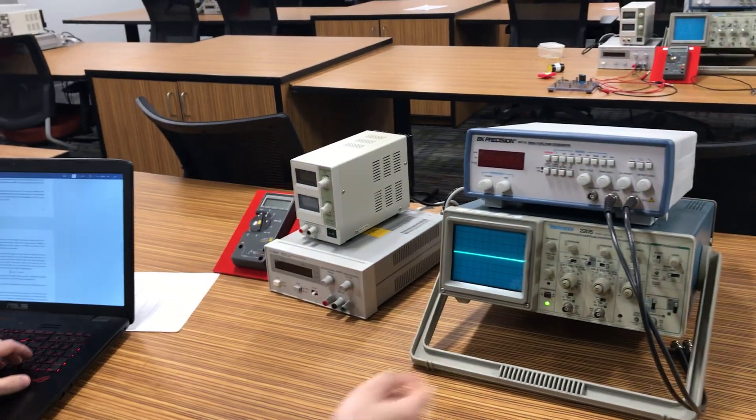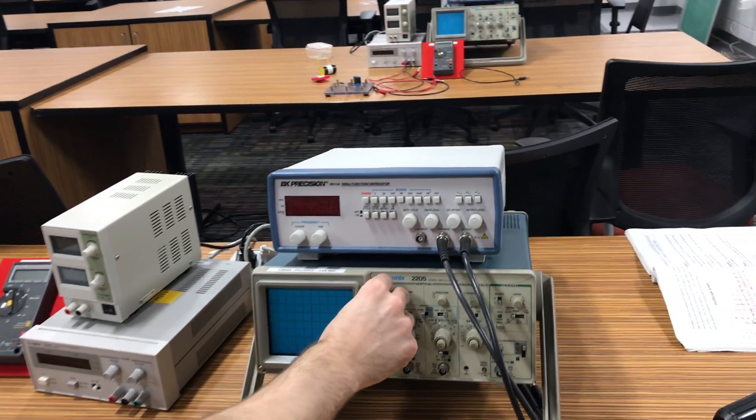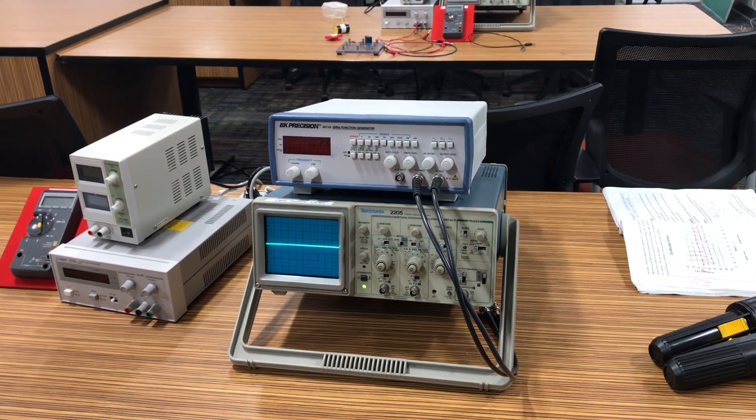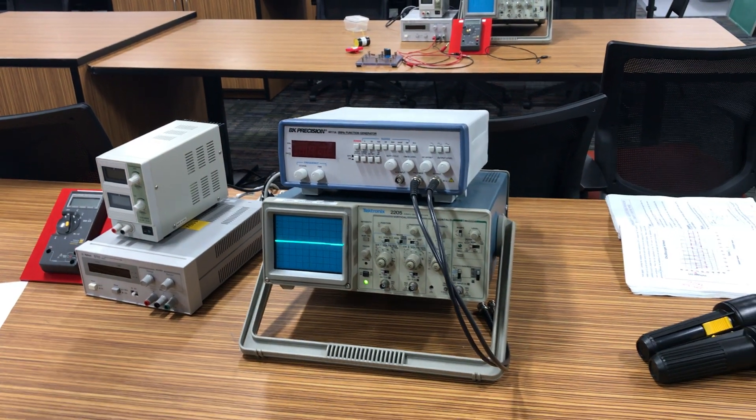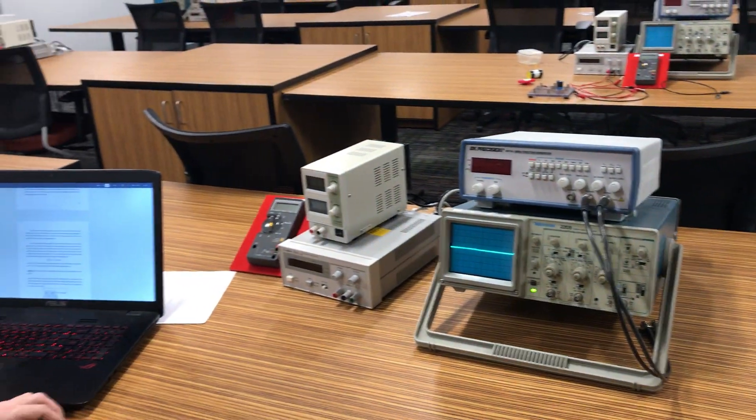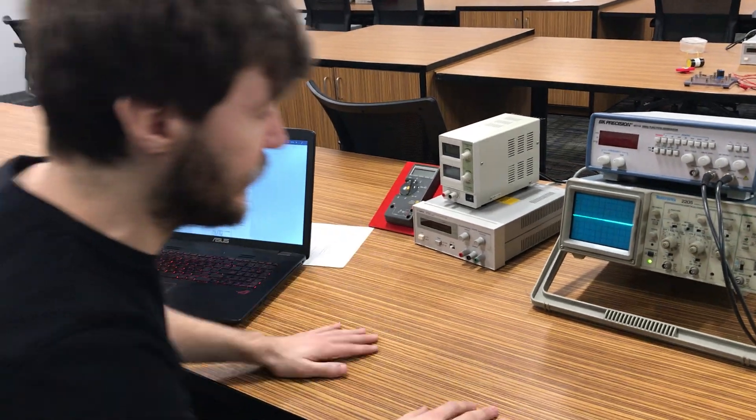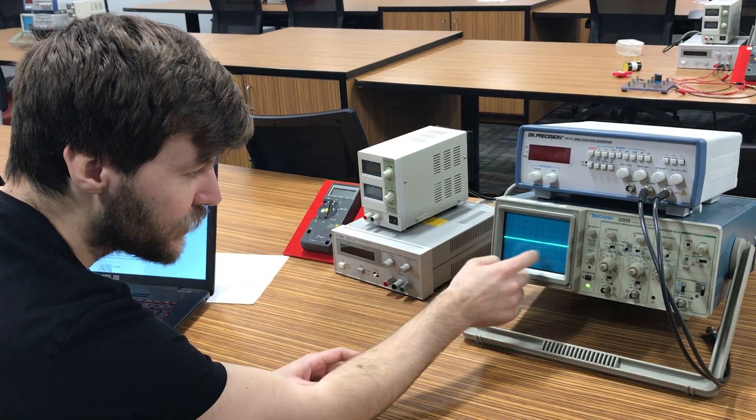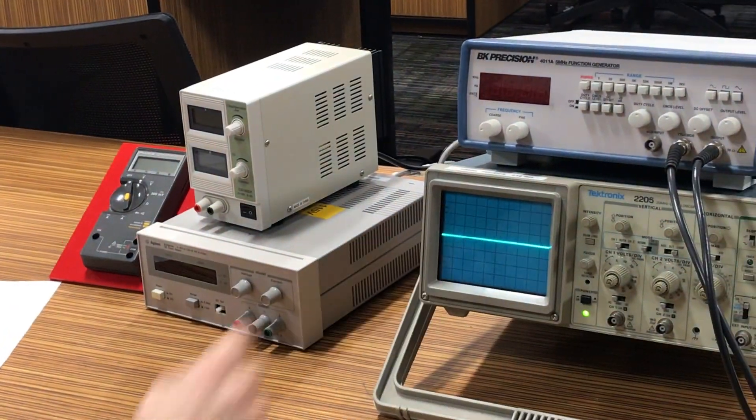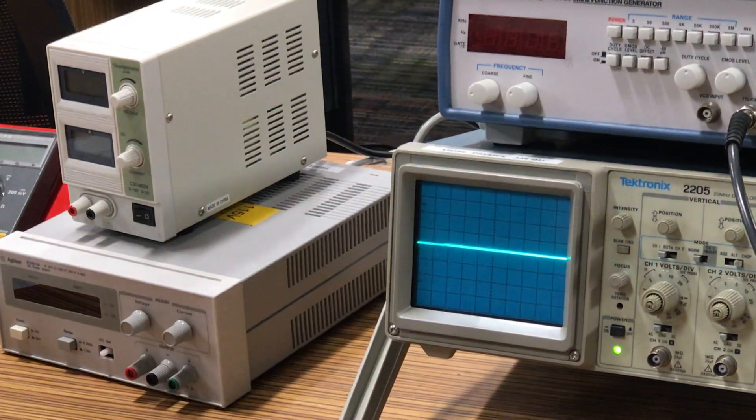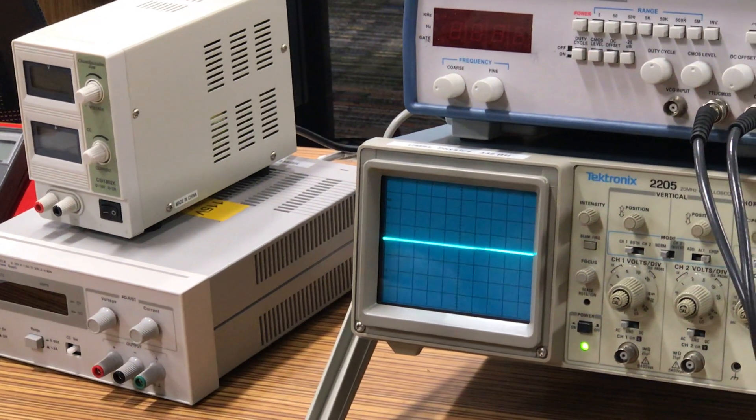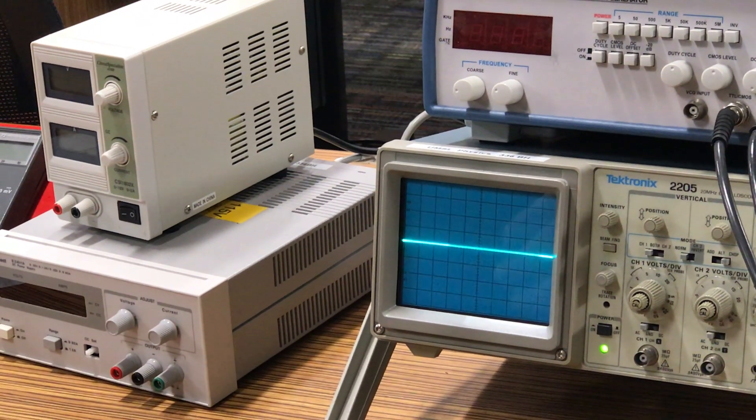We also have this intensity button that brightens or darkens what we're looking at, but what's really important to note is how to take readings on this thing. If you look here there's these little squares that are divided up on the screen and we're going to refer to each square as a division.